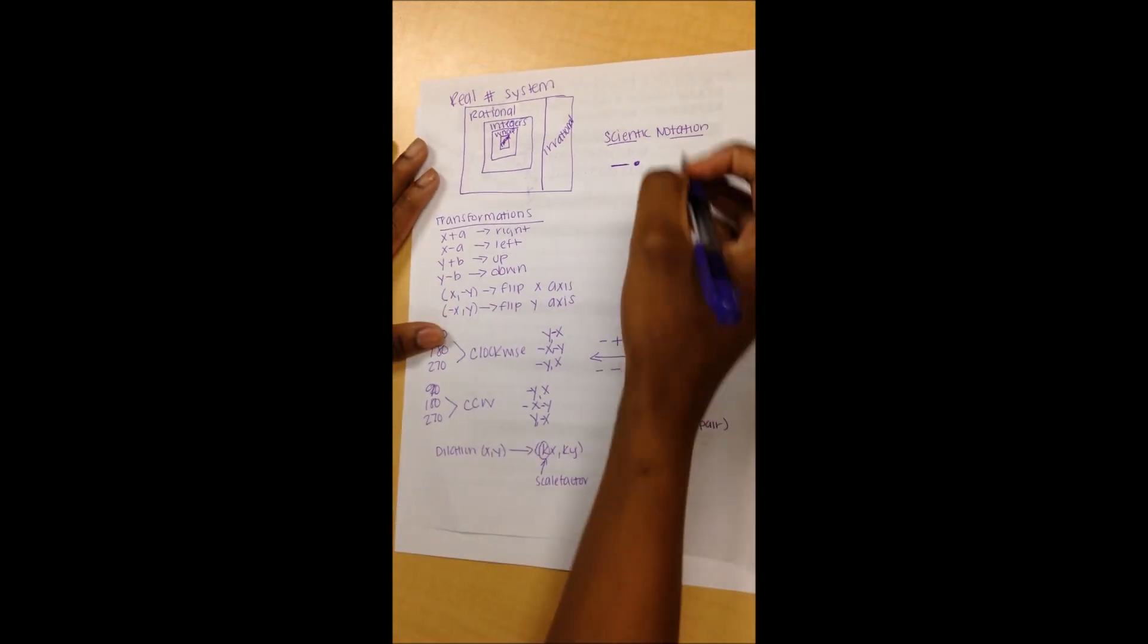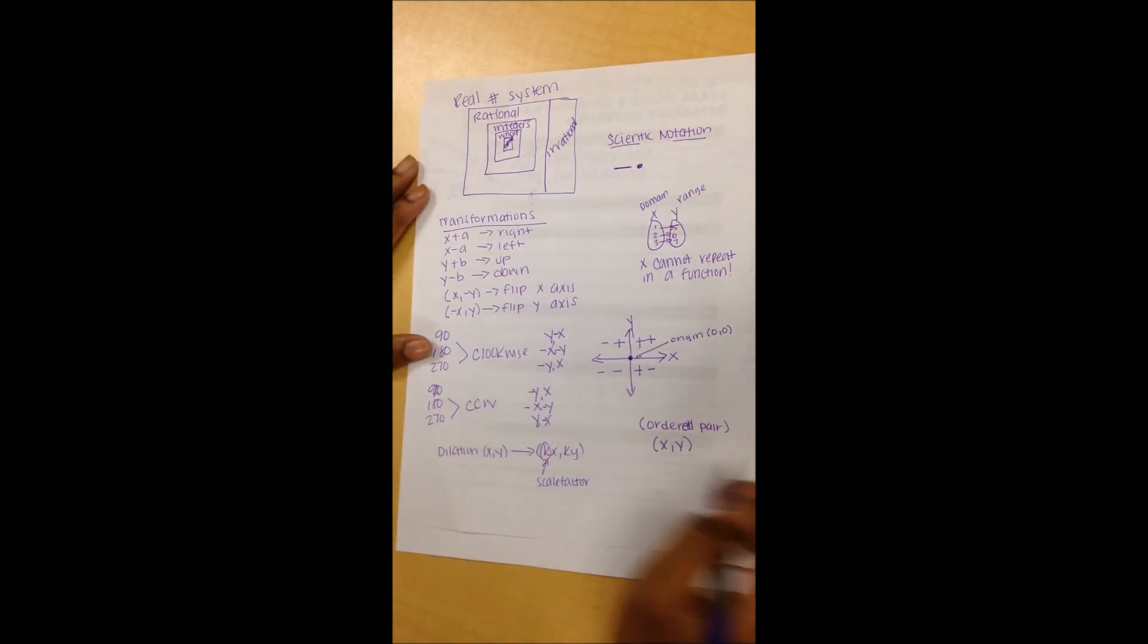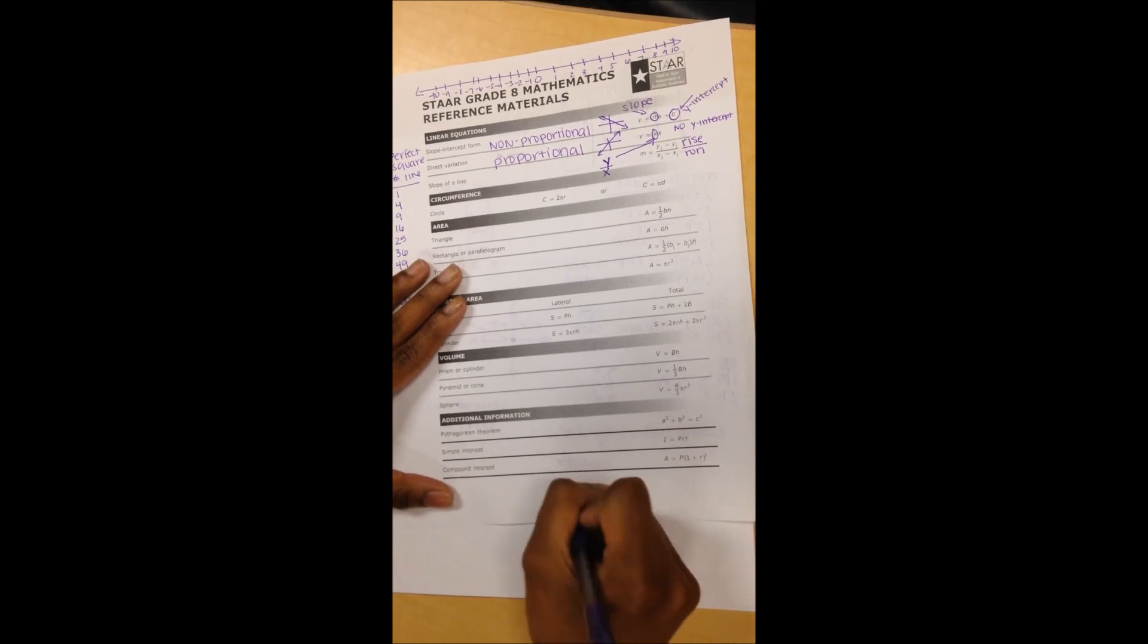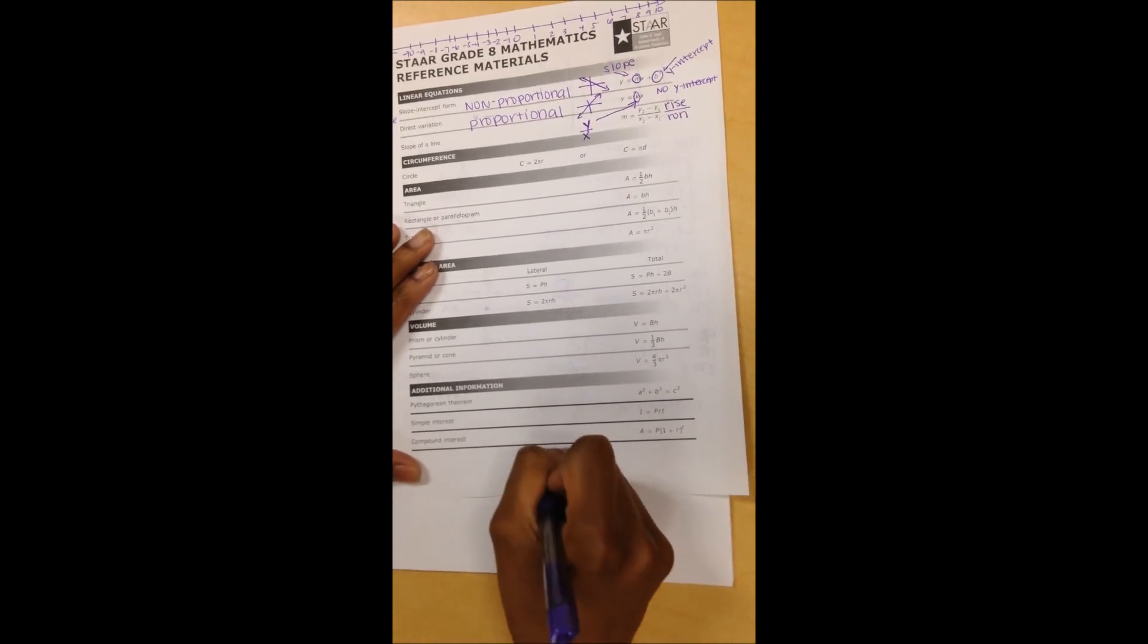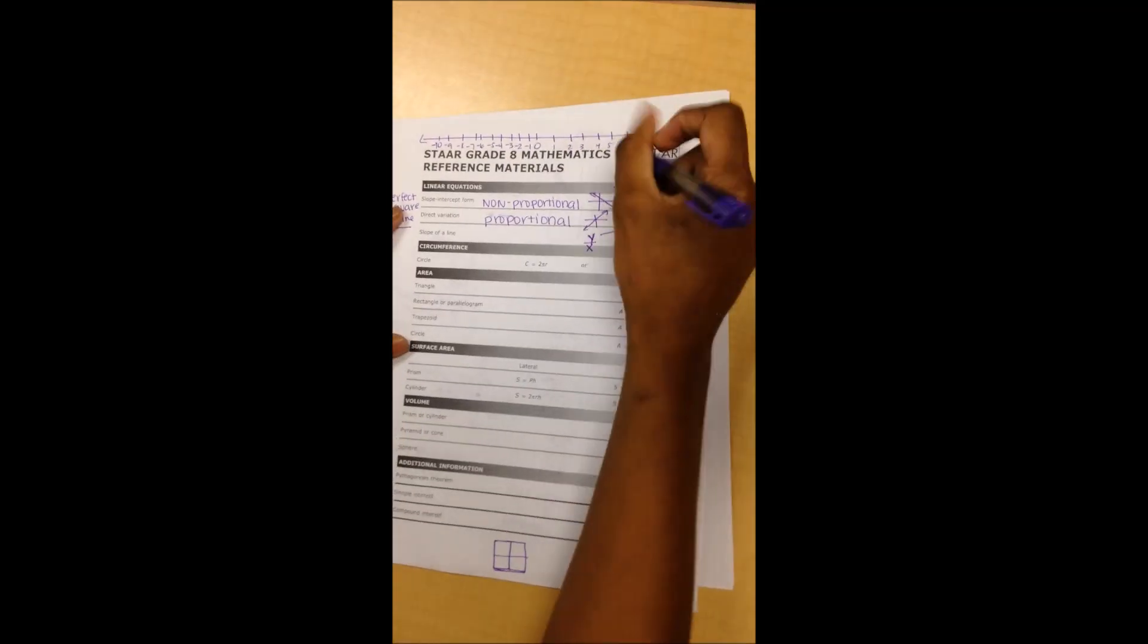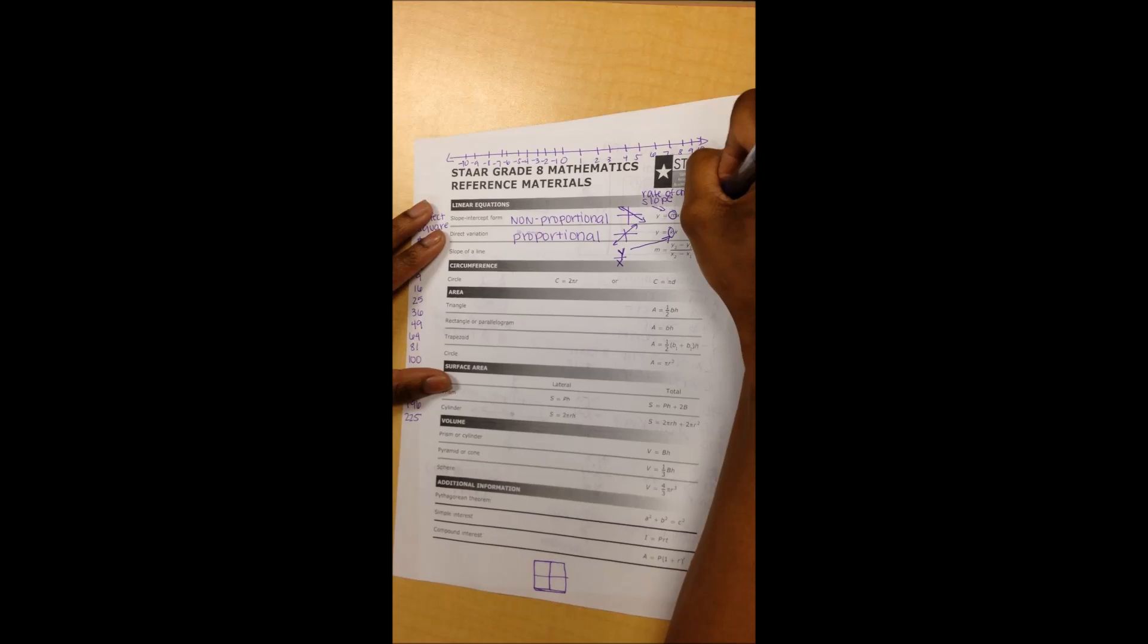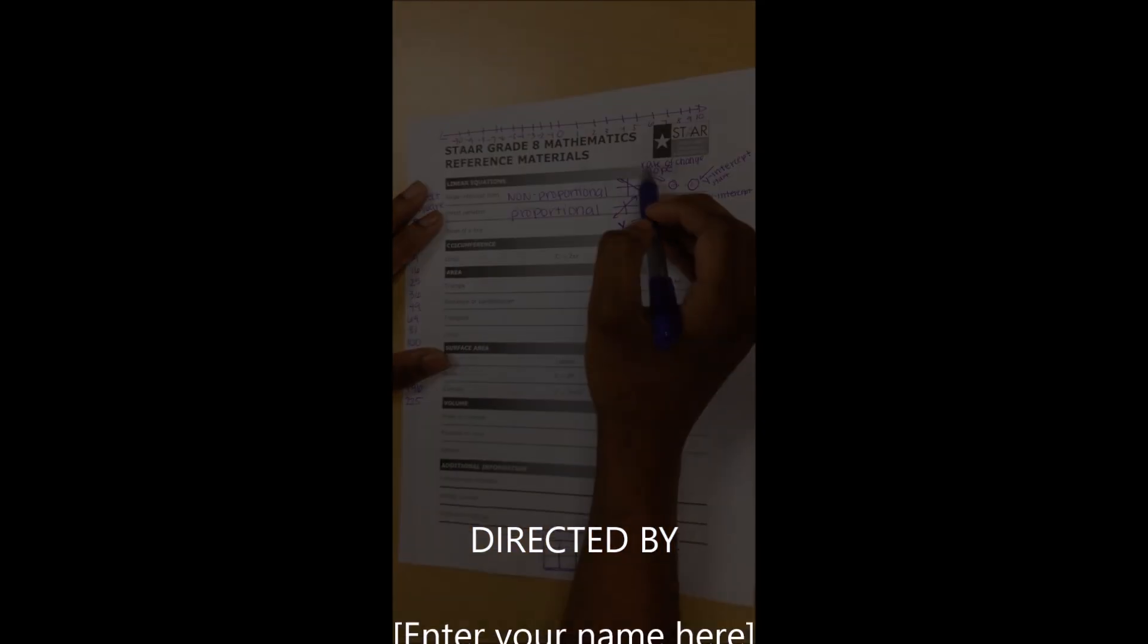And I think that about wraps it up. We got functions, we got the real number system, scientific notation, transformations, even some spiral in here, direct variation. All of those things are here. Also a proportion. Remember your little proportion box. Also note your slope is your rate of change, and the y-intercept is where you start. So if you're graphing, you always start at your y-intercept. Your slope is your rate of change.